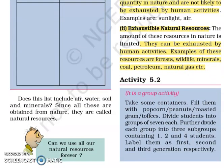Does this list include air, water, soil and minerals? I am sure that all of your natural resources include these things: air, water, soil and minerals. Because these are so essential that without these things we cannot survive. So all of your natural resources must include air, water, soil and minerals.